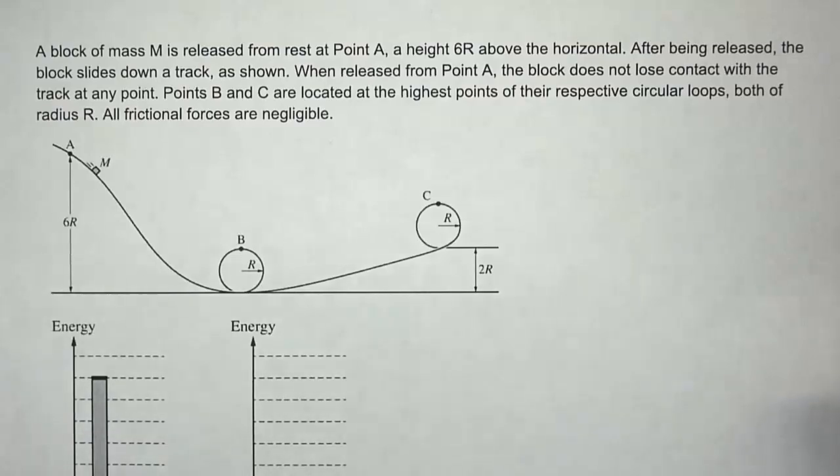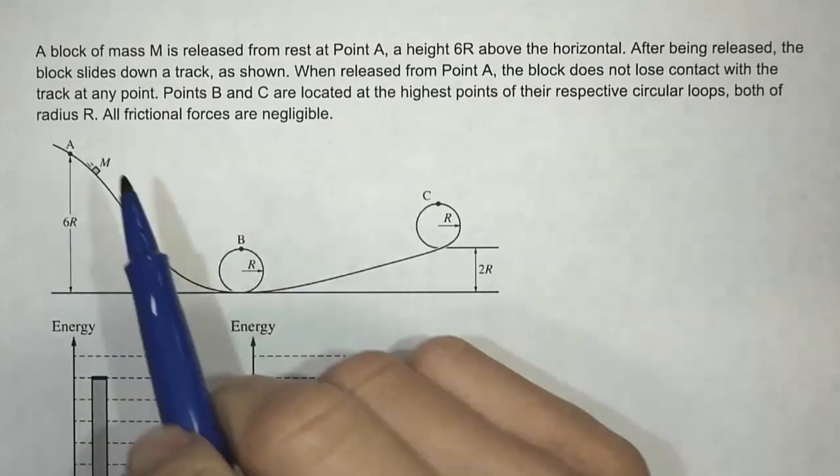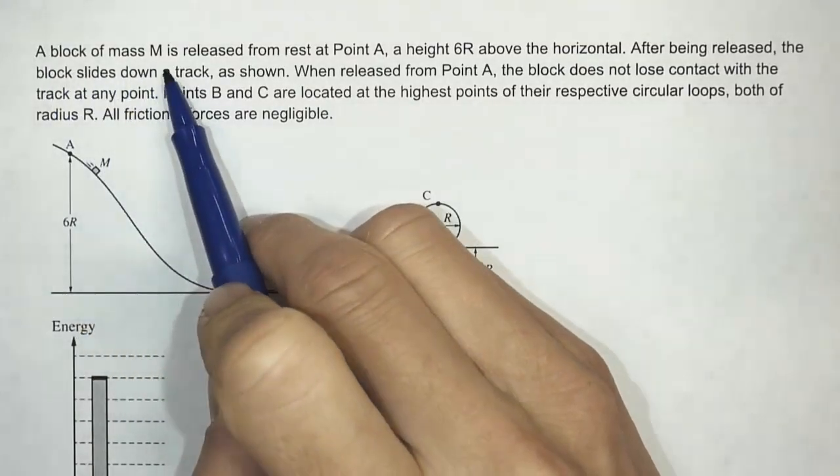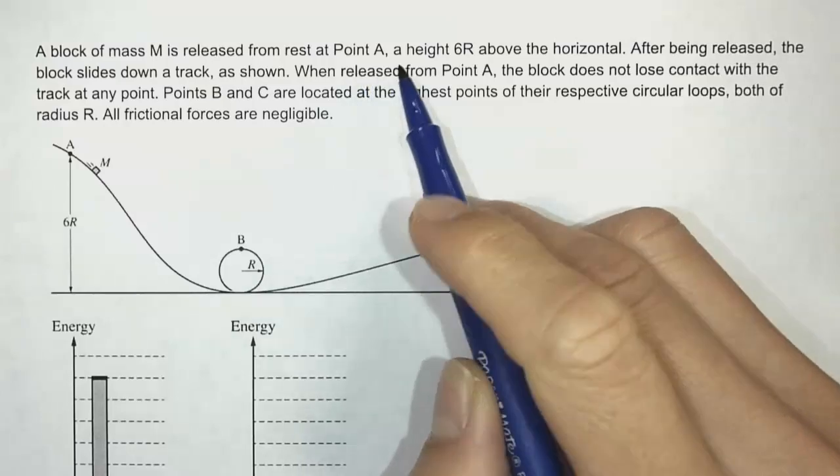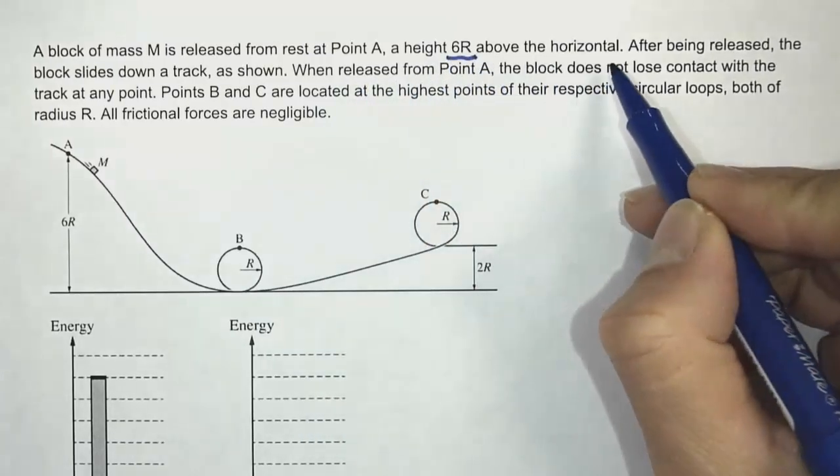This is free response question number one from 2024 AP Physics 1. In this problem, it says that a block of mass M is released from rest at point A, a height of 6R above the horizontal.